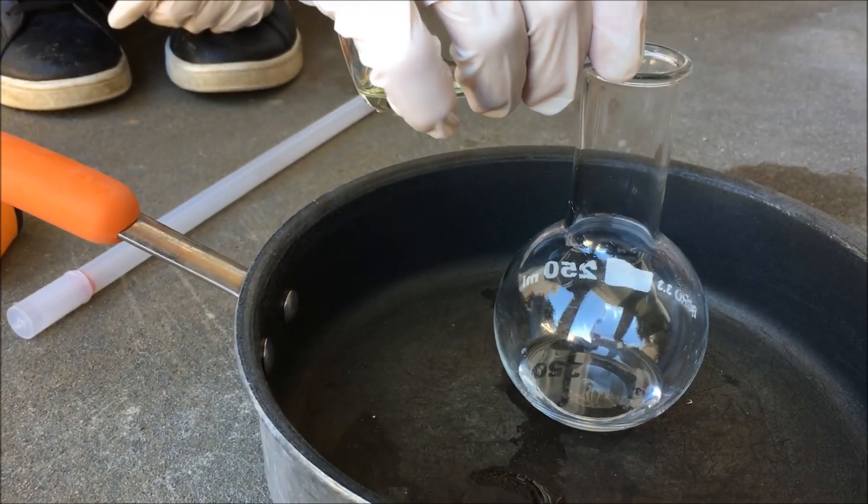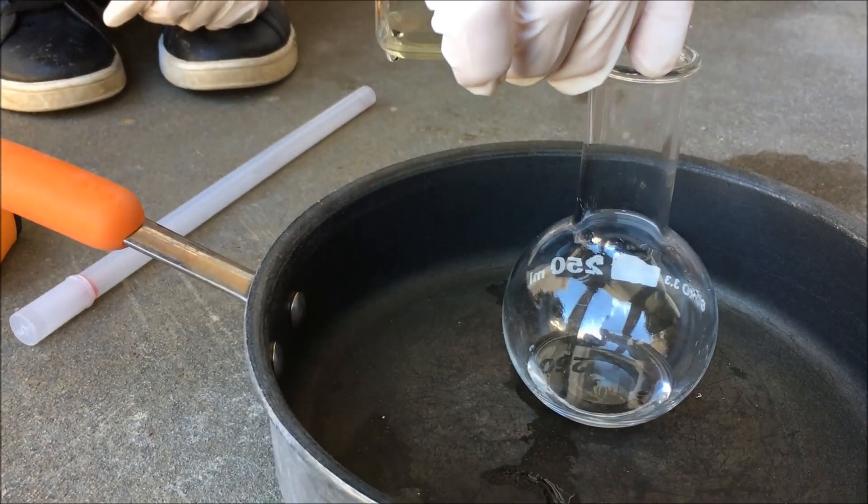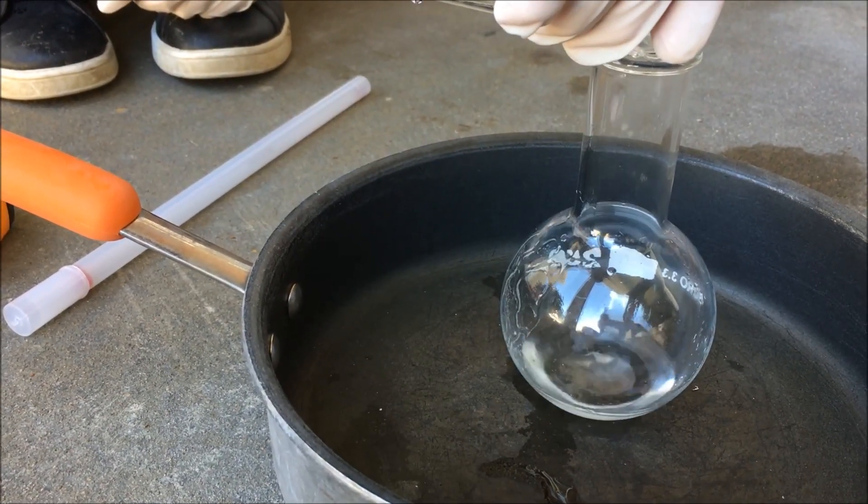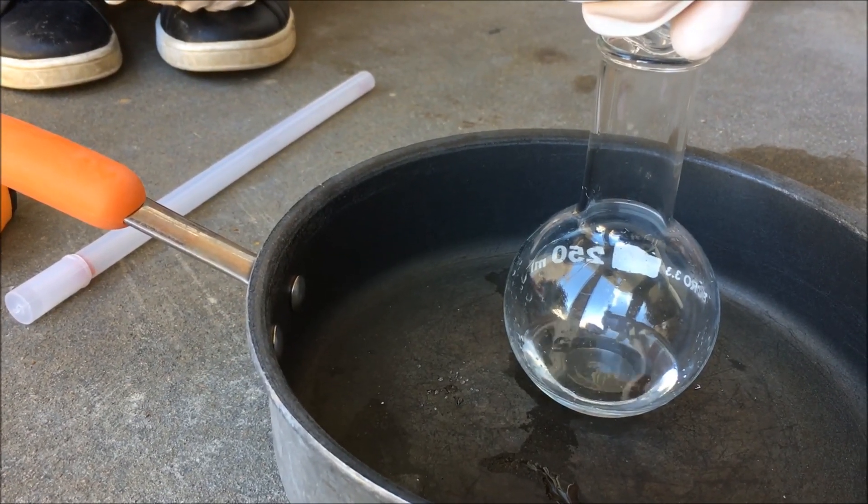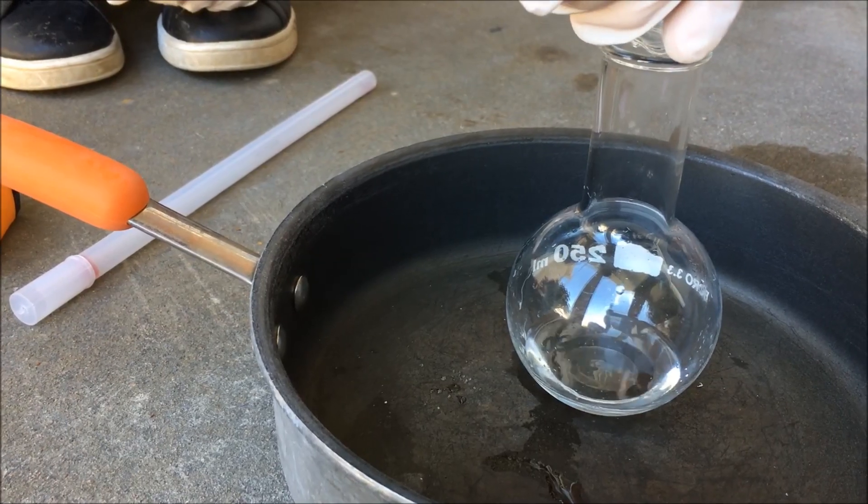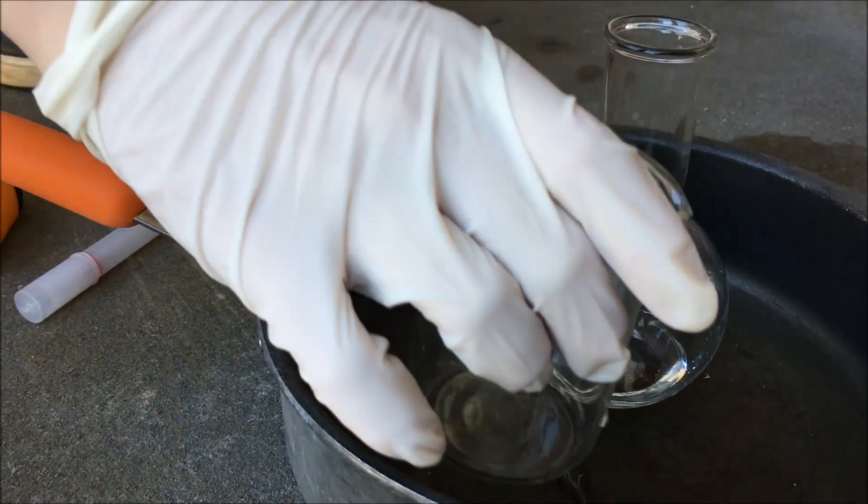Pour the silver nitrate solution into the ethanol. Then heat it to 65 degrees Celsius for 30 minutes. If it makes its own heat, then take it off of the heat.